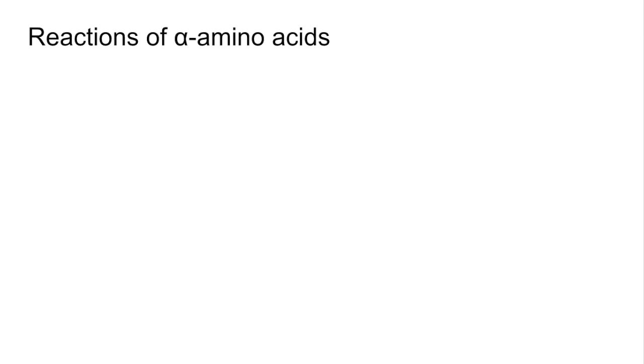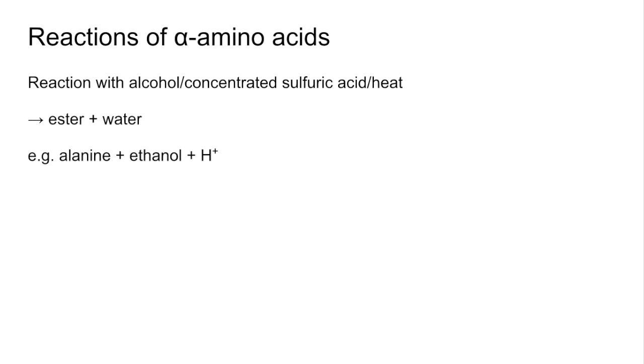The final slide: we're going to look at the reactions of alpha amino acids with alcohols in the presence of concentrated sulfuric acid and heat. That's going to give us an ester plus water. The example I'm using is alanine, where the R group is a CH3 group. I'm reacting that with ethanol and the H+ ions from the acid.